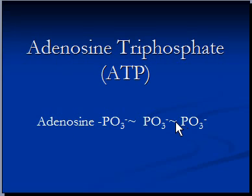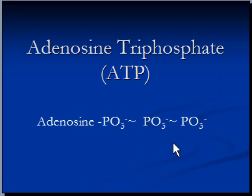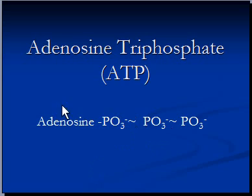The curly symbols represent the bond between phosphate molecules, which are high energy bonds. As cells need energy, the first bond breaks up to release 7,300 calories of energy. This results in the formation of adenosine diphosphate. The second bond can also break up, releasing another 7,300 calories, and the remaining molecule is known as adenosine monophosphate.